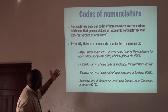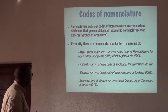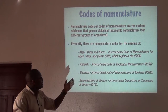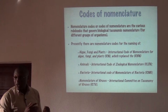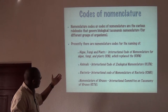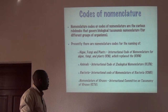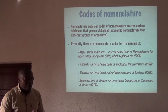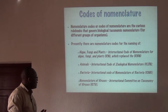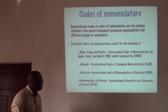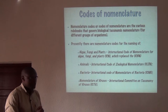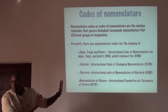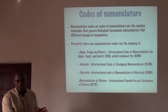Among the most prominent codes, we have the International Code of Nomenclature for algae, fungi, and plants, which replaced the International Code of Botanical Nomenclature in 2011. We have the International Code of Zoological Nomenclature, the International Code of Nomenclature of Bacteria, and the International Committee for Viruses. There are additional codes but we do not need to discuss them all here.